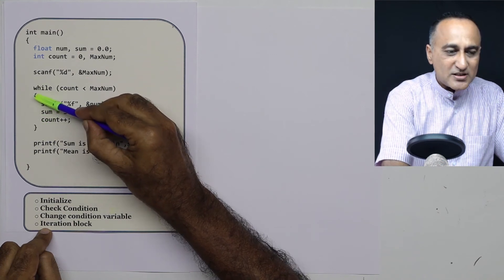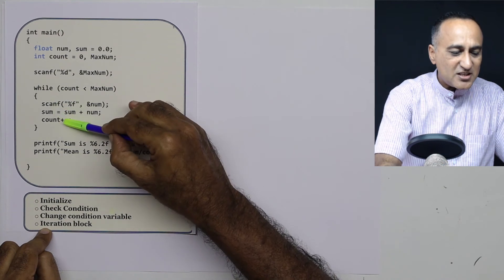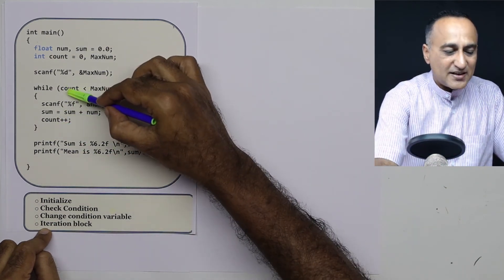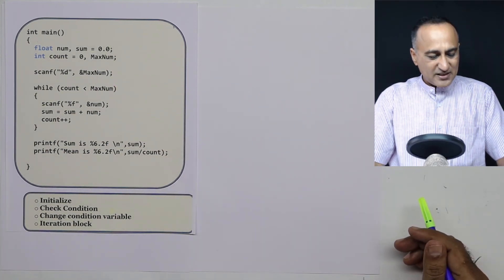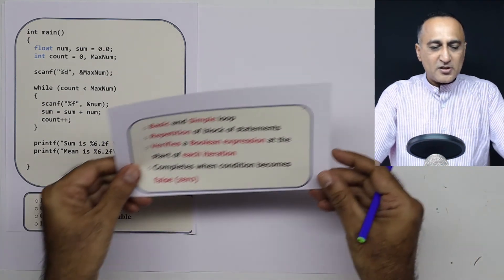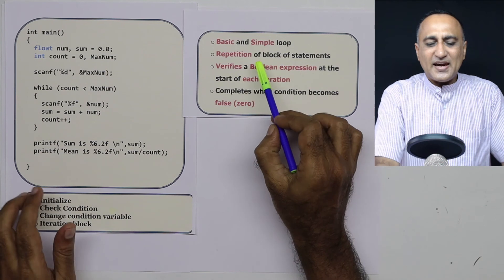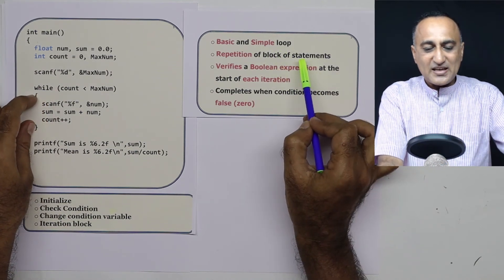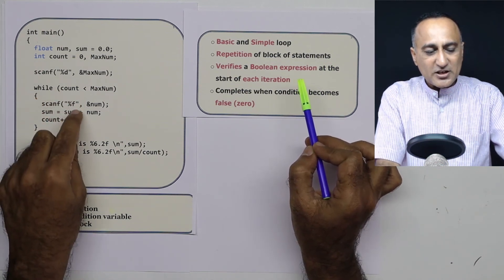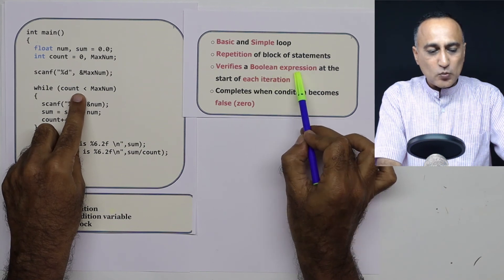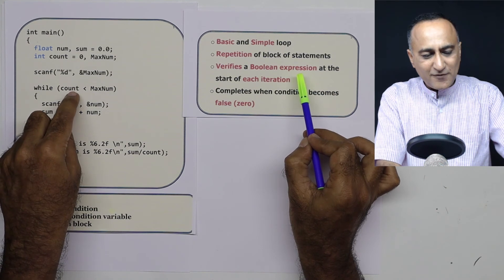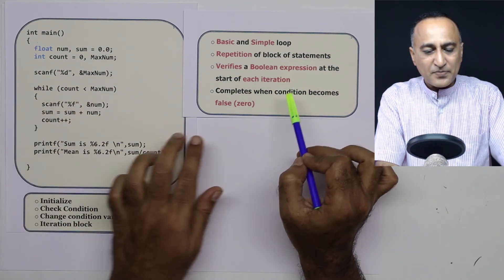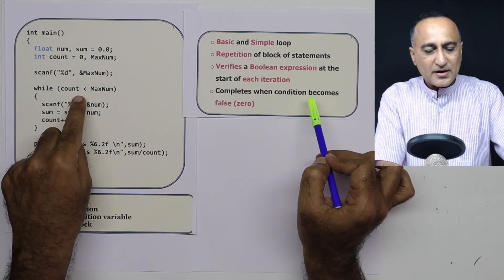Anything between the curly braces is known as a compound statement or block of statements — all three statements are associated with the while loop and will get executed every time the condition is true. While is a very basic, simple, and very frequently used loop in C programming. The job of a loop is to repeat a set of statements again and again as long as the Boolean expression is true. Before executing even the first time, it checks whether count is less than maximum — only if true will it execute; otherwise, it won't execute even once. It stops when the condition becomes false.